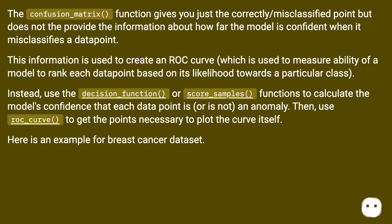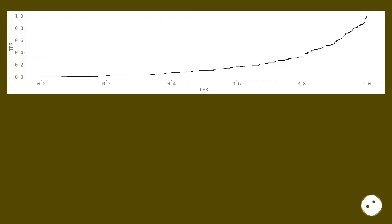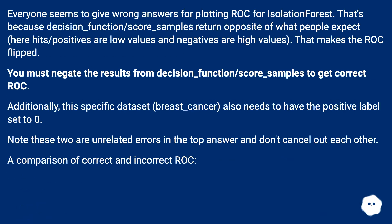Here is an example for the breast cancer dataset. Everyone seems to give wrong answers for plotting ROC for Isolation Forest. That's because decision_function and score_samples return the opposite of what people expect. Here, hits and positives are low values and negatives are high values, which makes the ROC flipped.